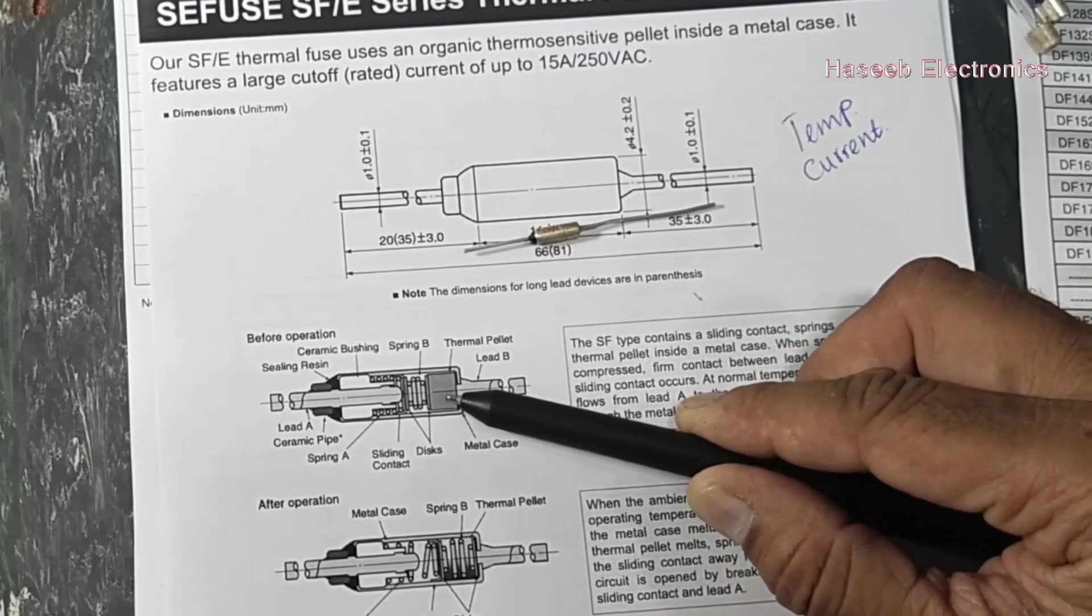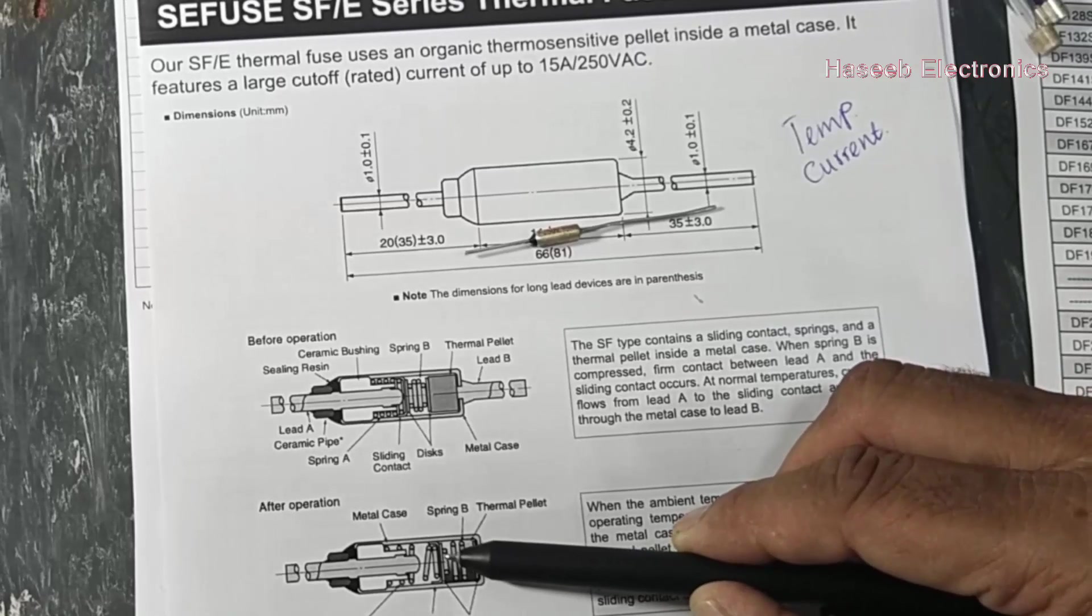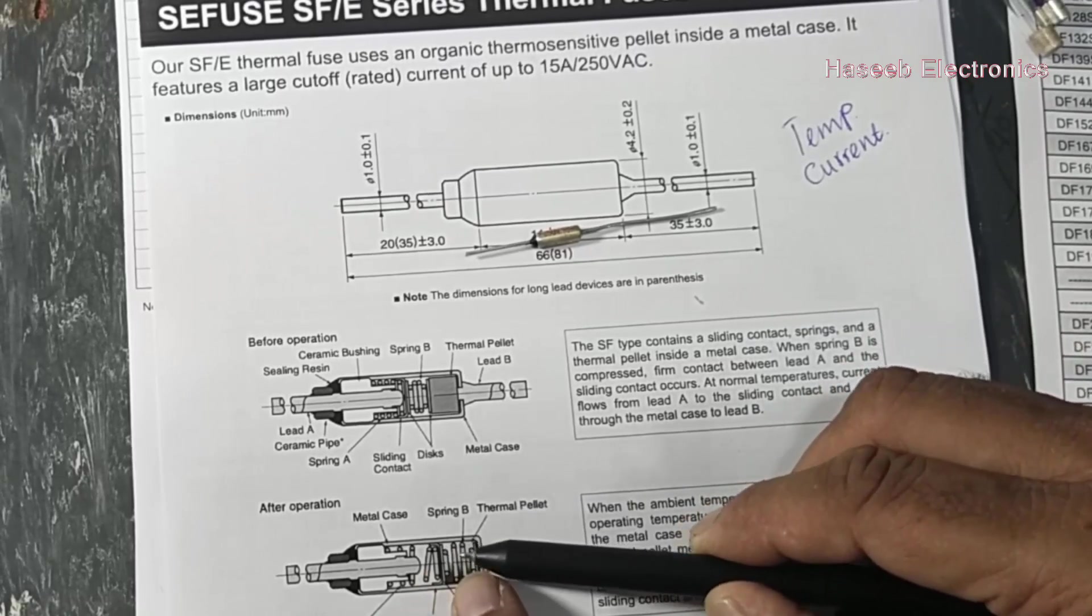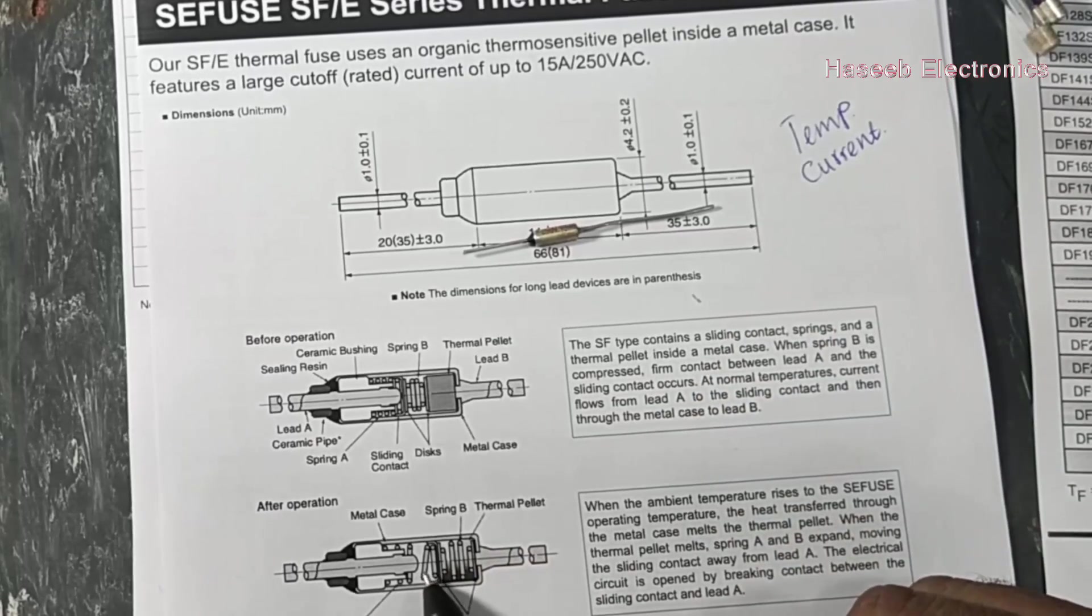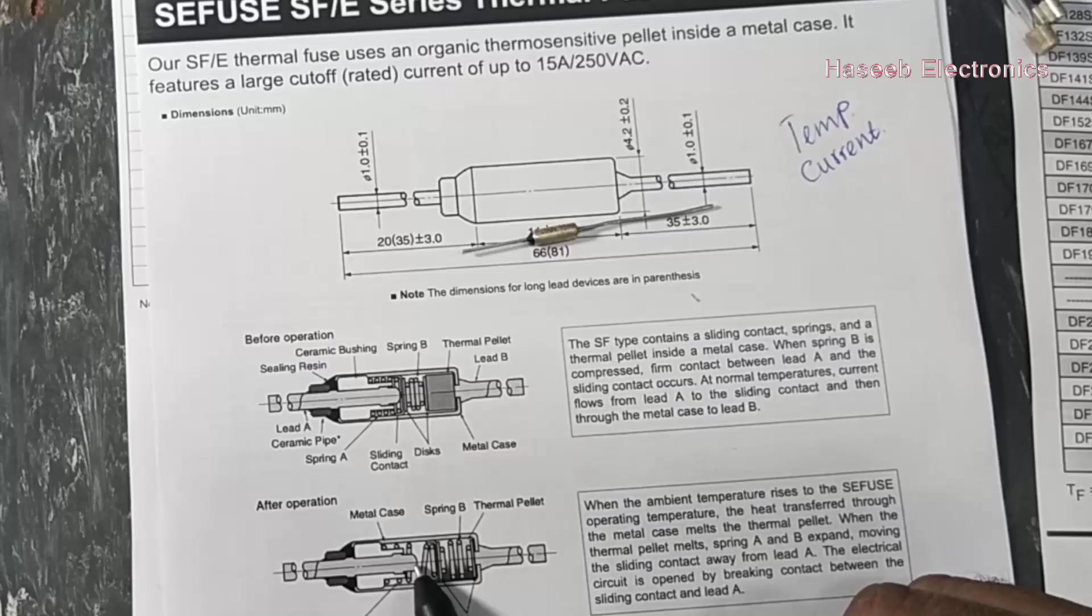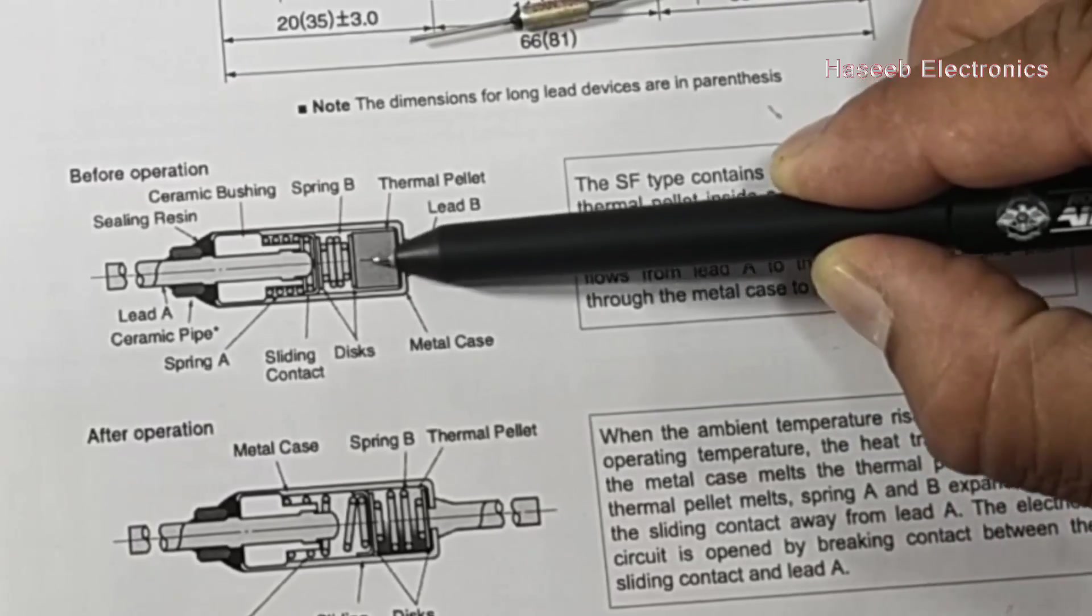Its thermal pellet will diffuse and it will give space to retrieve back the spring. When the spring returns back, it will make a gap automatically between this connection. Before this it was passing the current through this thermal pellet.